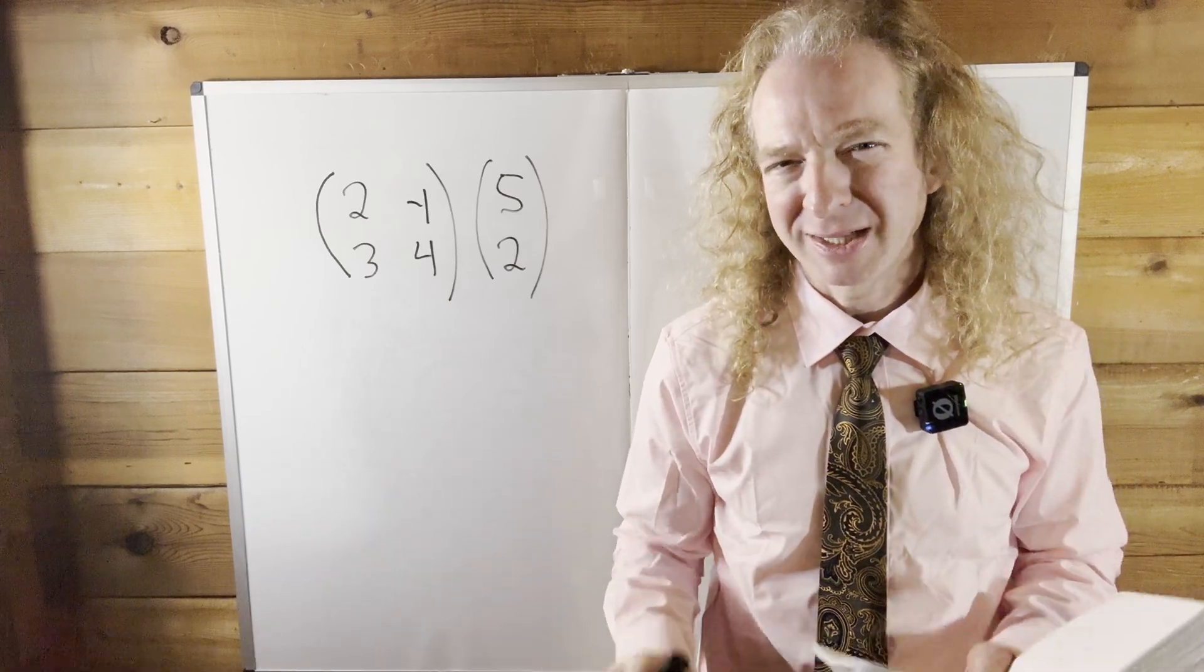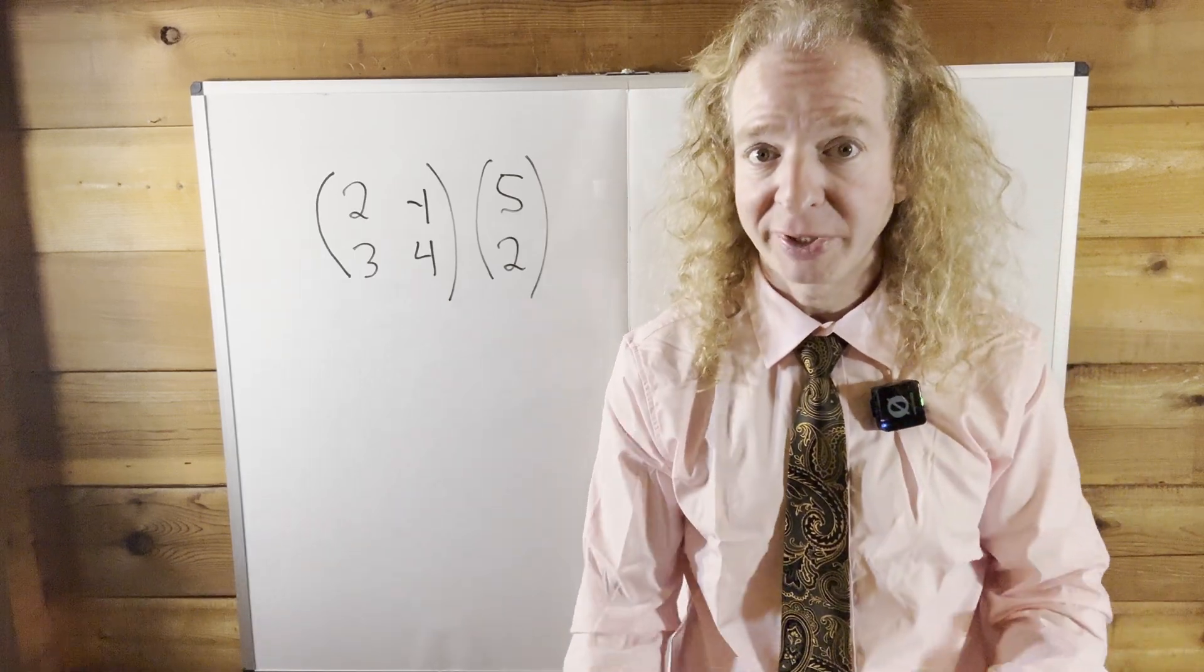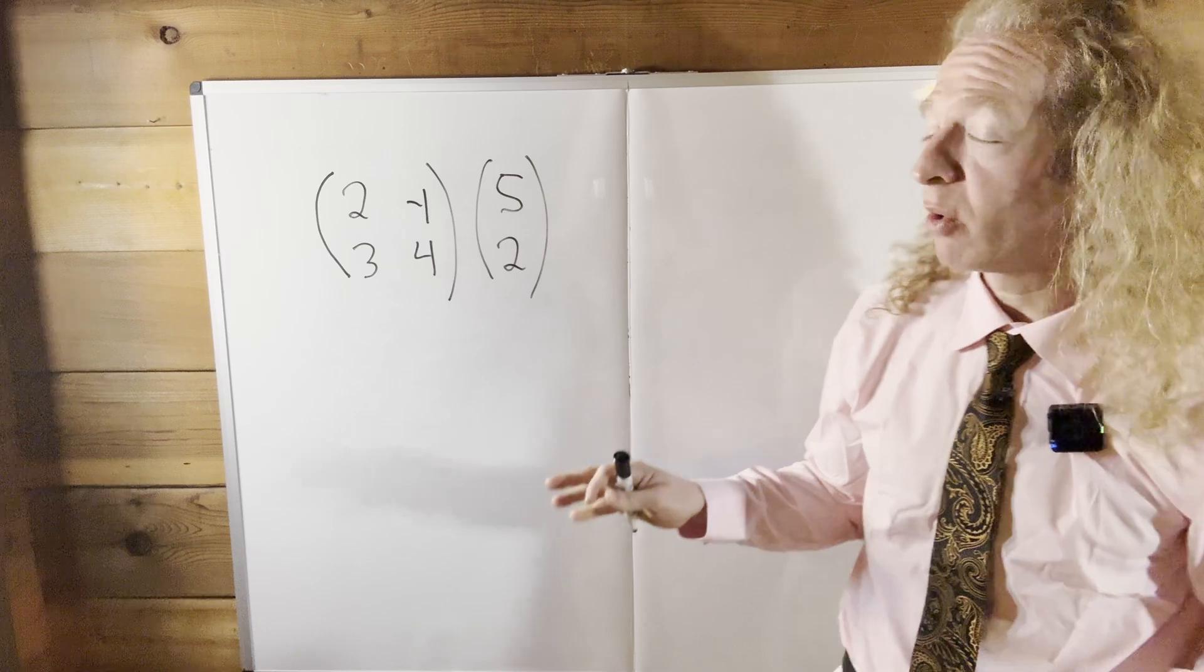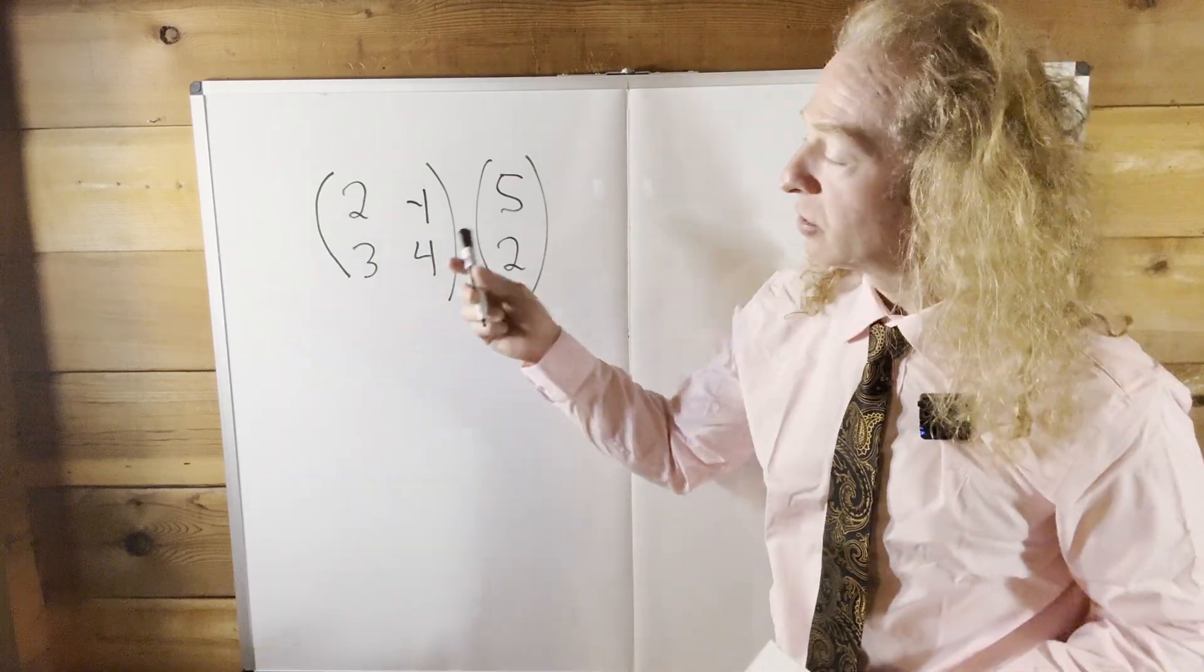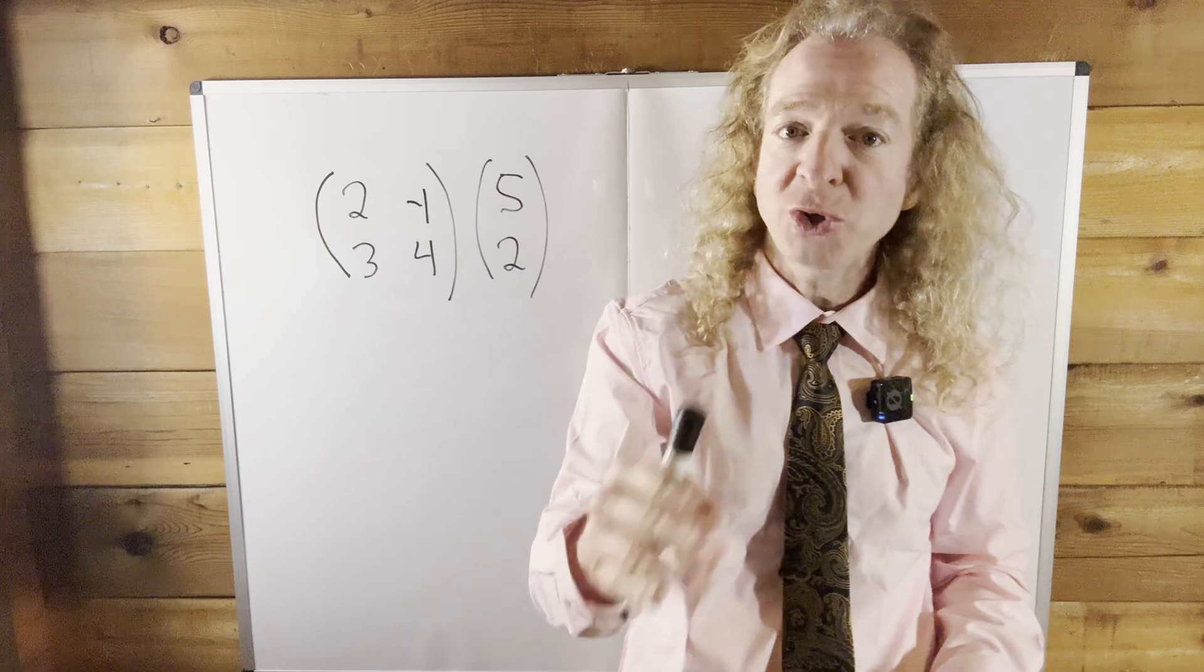Hi, in this video we're going to do an example of matrix multiplication. So the first thing you want to do is check the dimensions of the matrix. So the dimensions are rows by columns.